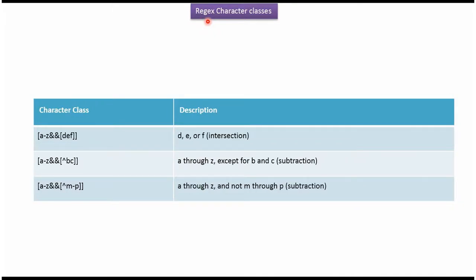This video tutorial will cover regex character classes. This character class means A through Z and it should be D or E or F — basically it is intersection. This character class means A through Z and it should not be B and C — basically it is subtraction. This character class means A through Z and it should not be M through P, and it is also subtraction.